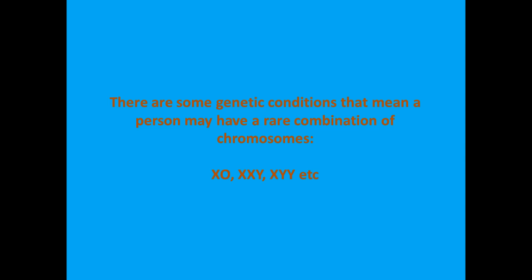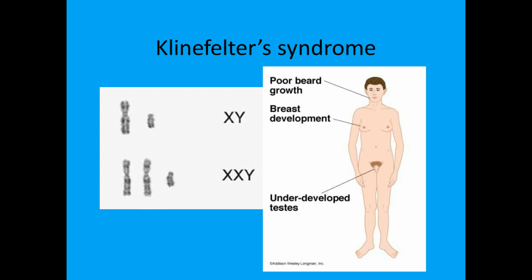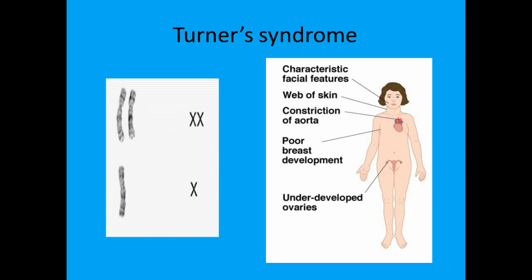Unfortunately, there are some genetic conditions that make this more complicated. In Klinefelter's syndrome, the young man has an XXY combination. This can lead to gynecomastia, which is the development of breasts, possible poor language abilities, some learning difficulties, and they can be shy. In Turner's syndrome, the young lady has only one X chromosome. This can lead to physical differences such as a wider neck, underdeveloped ovaries, a lack of menstruation at puberty unless receiving intervention, and poor spatial ability.